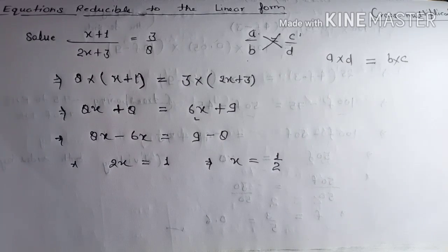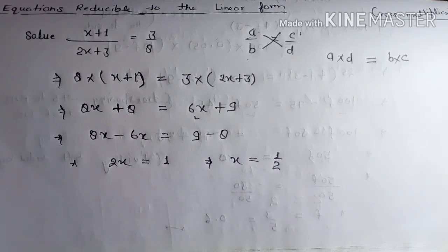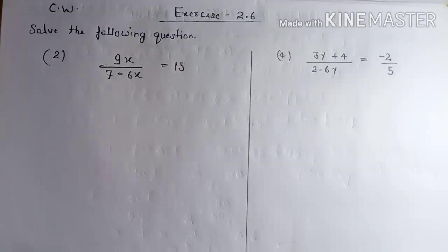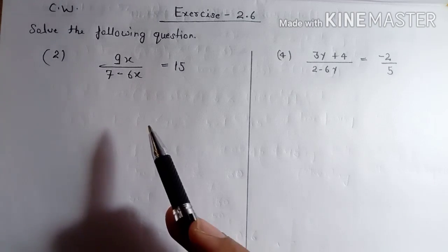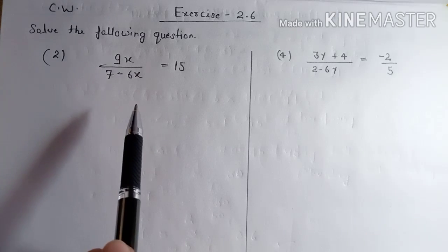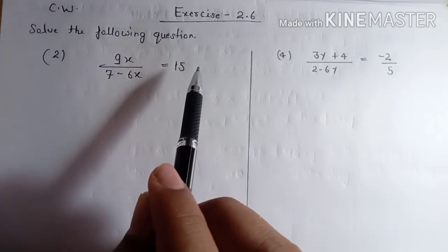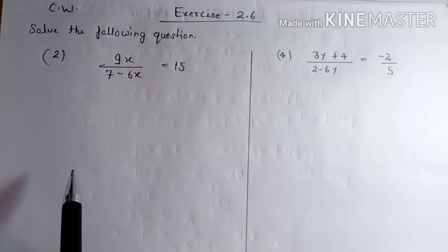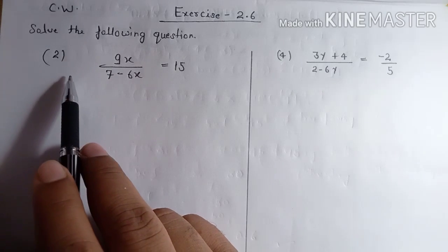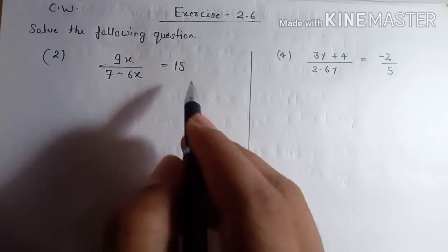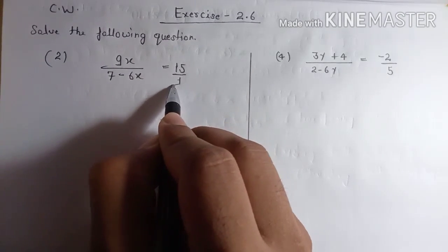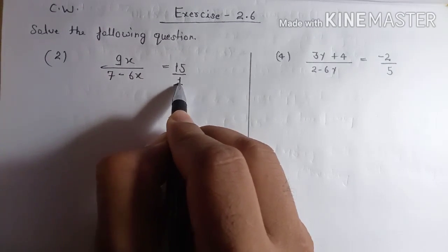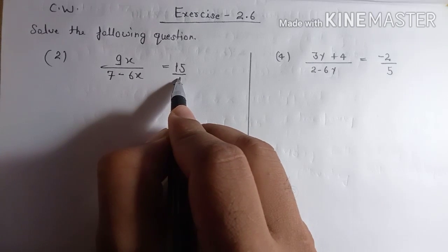We have to solve our questions in exercise 2.6 by this method. Our first class work question is: nine x upon seven minus six x is equal to fifteen. How to solve this question? Fifteen can be written as fifteen upon one.